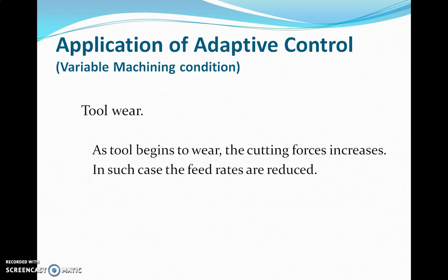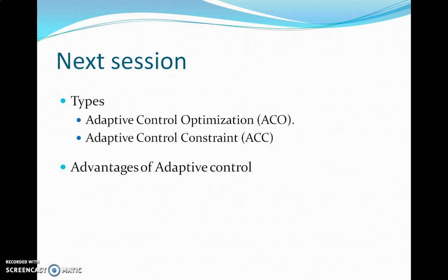The fifth condition is tool wear. When using very sharp or new tools, cutting forces are very low and material can be removed at a good speed. As the tool starts to wear, more and more cutting forces act on it, and feed rates should be reduced accordingly. Adaptive control can handle this real-time situation during machining. These were the five situations where adaptive control can be applied for optimum utilization of the machine tool. In the next session, we will cover types of adaptive control and advantages of adaptive control. Thank you.